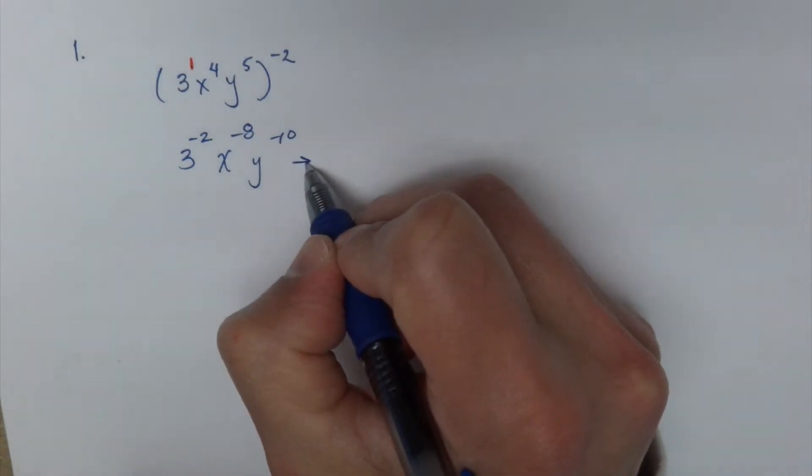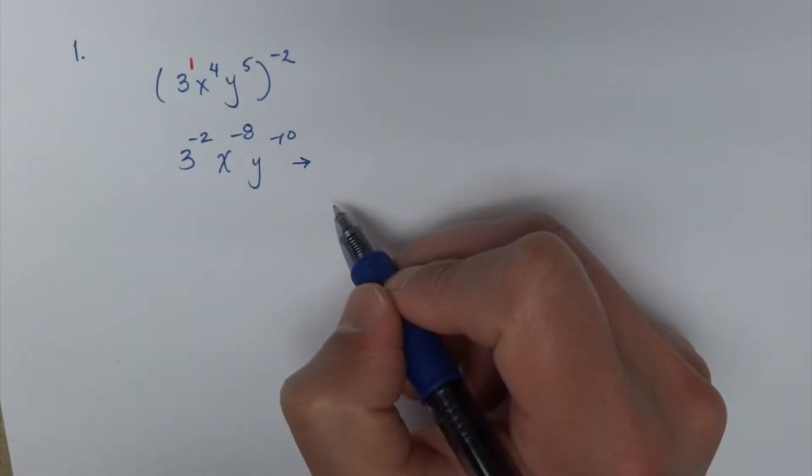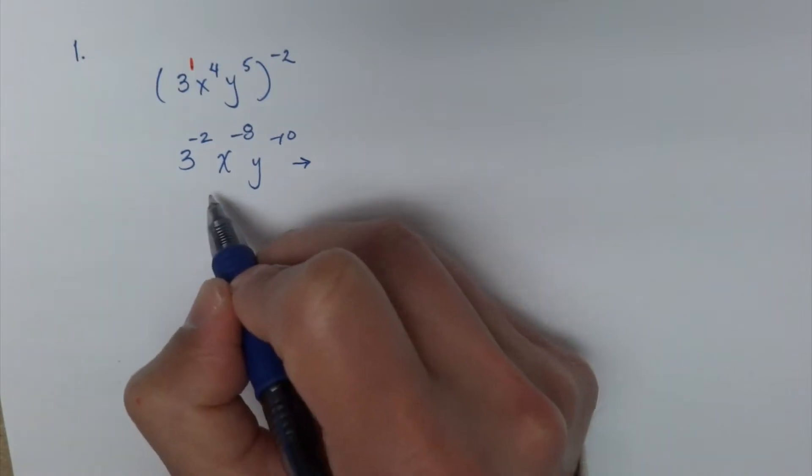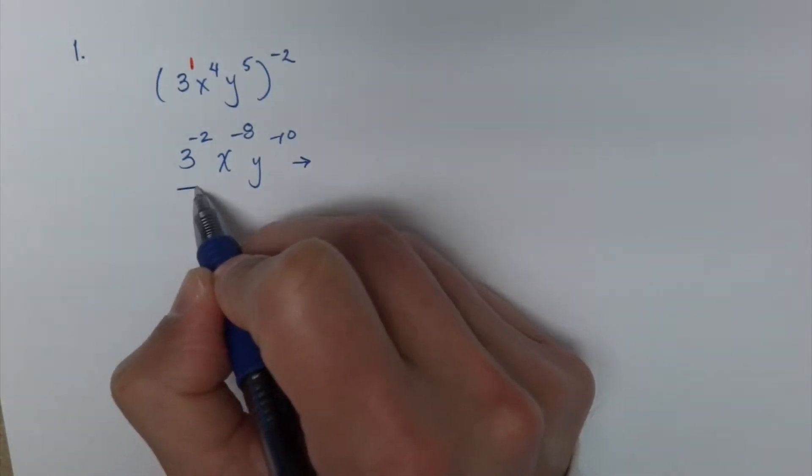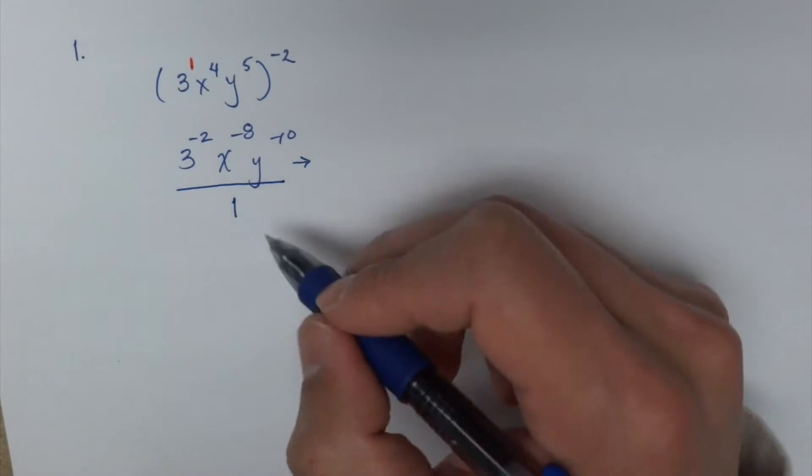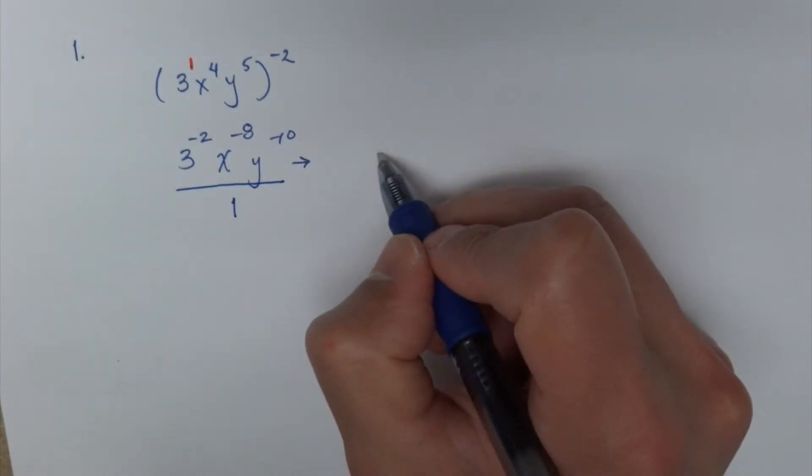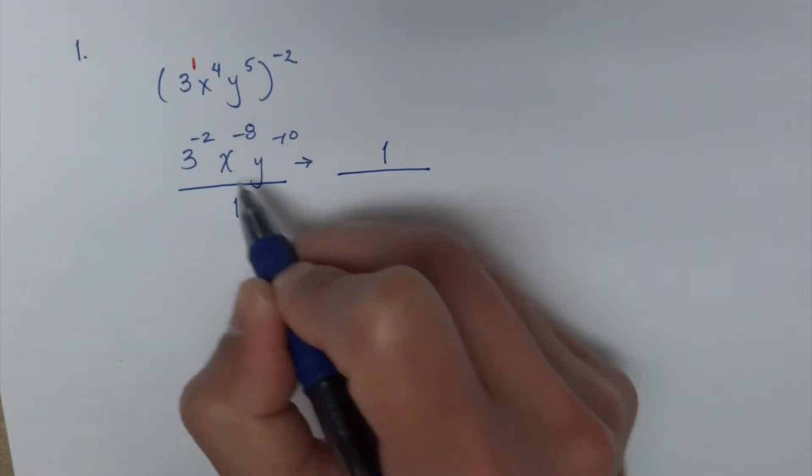Now this you just go ahead and simplify it. Remember negative exponents we do the reciprocal. Well that means pretend there's a 1 underneath here and we're just going to do the reciprocal of everything because they're all negative.